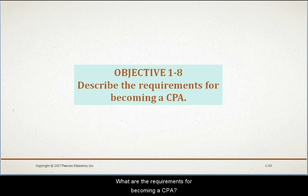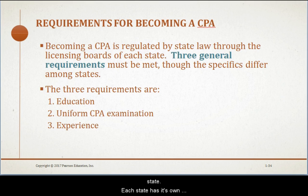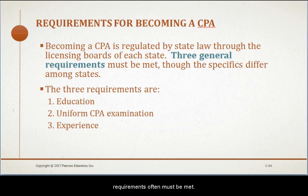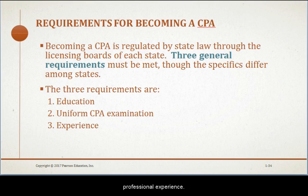What are the requirements for becoming a Certified Public Accountant? The use of the title CPA is regulated by state law through the licensing boards of each state. Each state has its own regulations for becoming a CPA and retaining a license, and it is possible to transfer the CPA designation from one state to another, though some states require additional requirements. There are three general requirements: formal education, passing the uniform CPA examination, and the required professional experience as stated in each state law.